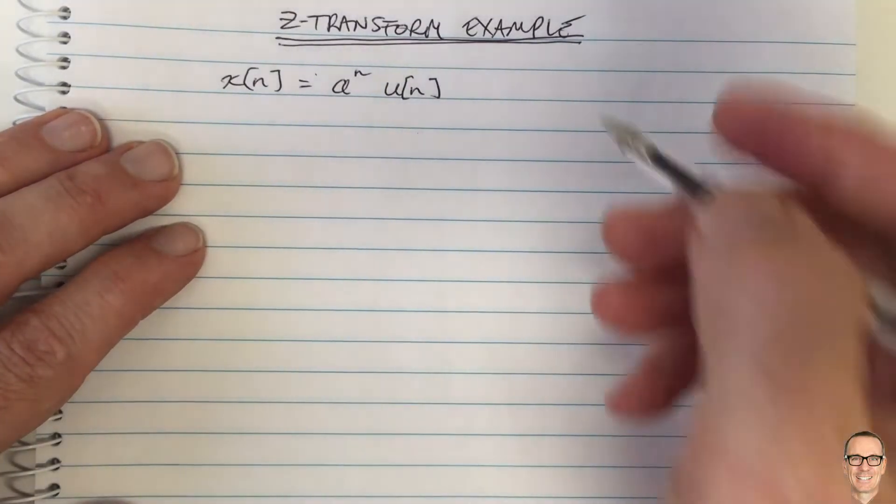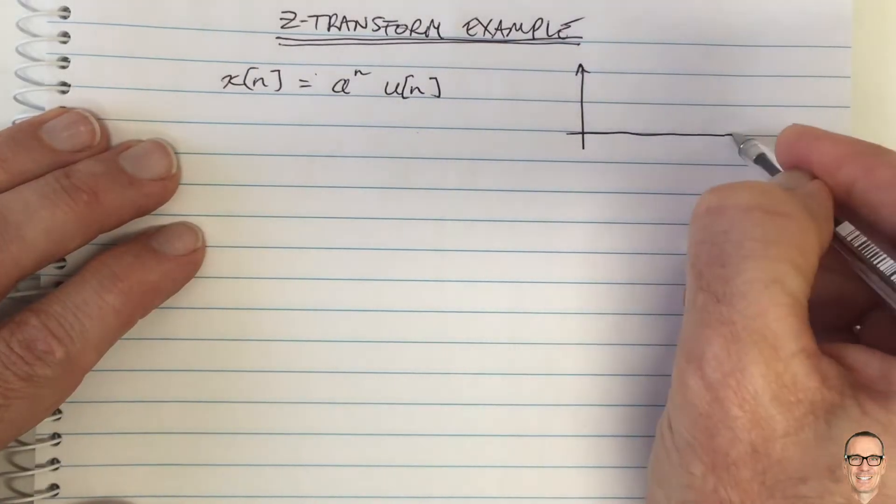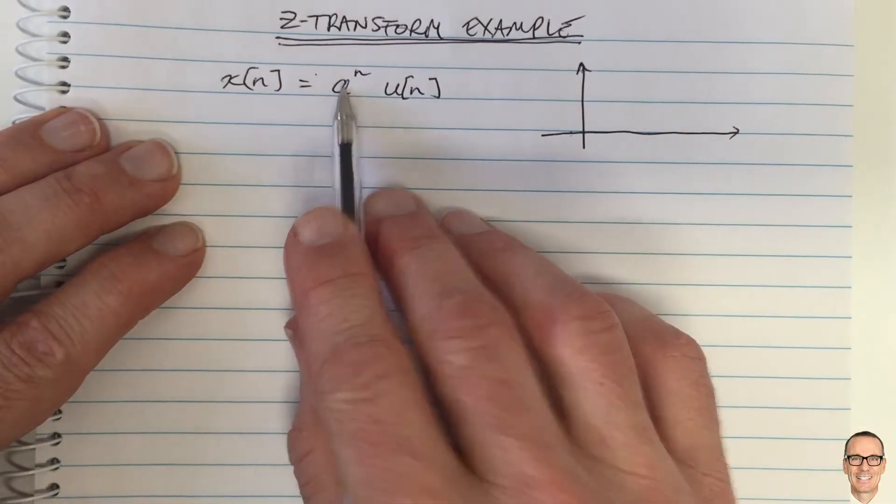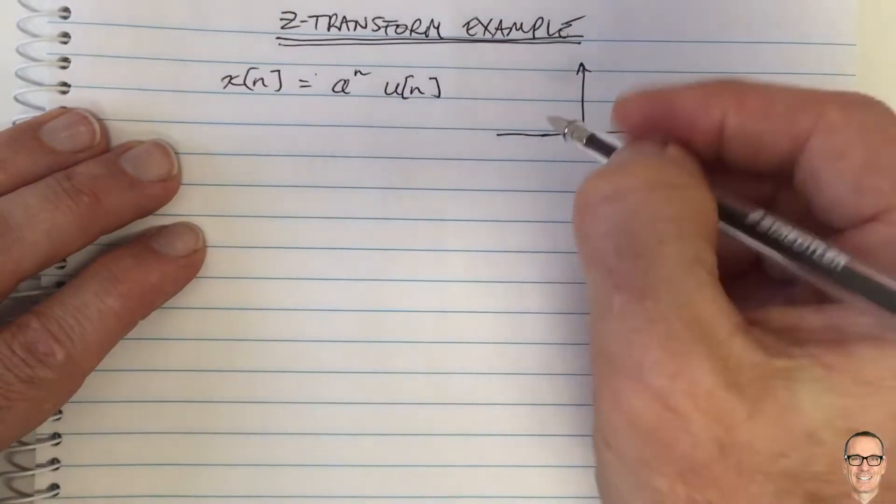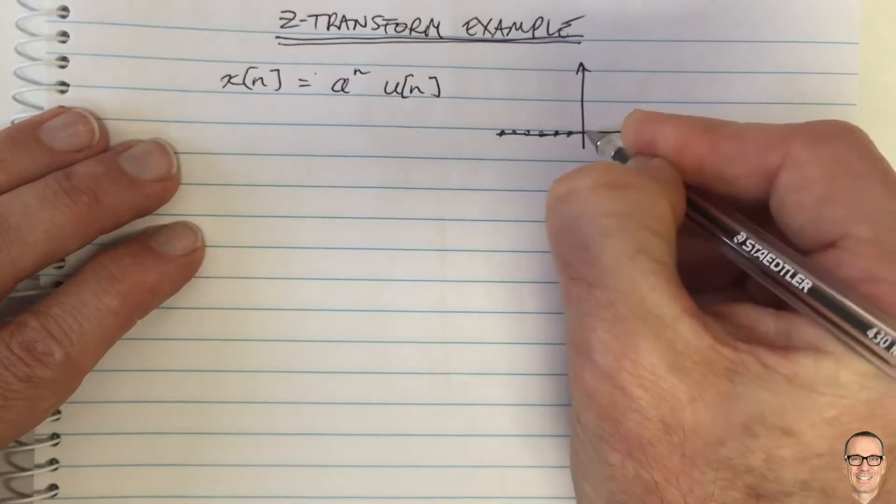I always like to look at these and think about them as functions. For example, here, if a was a number between 0 and 1, then this would be a function, because the step function is 0 for all integer values less than 0.